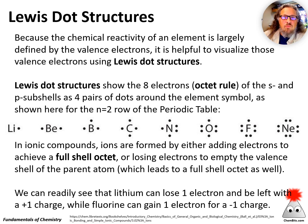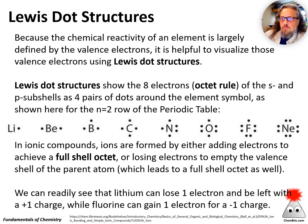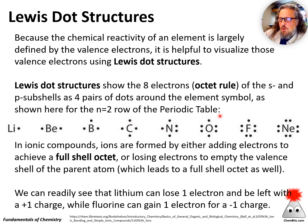One way we can visualize valence electrons — the outermost electrons in an atom — is by using a Lewis dot structure. In a full outer shell, we refer to this as an octet: there are eight electrons in a full shell. By convention, we put dots around the element symbol and pair them up, so when full — like neon, a noble gas — we've got eight electrons, four pairs, around the symbol.